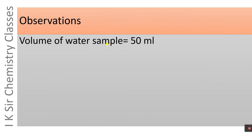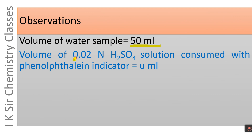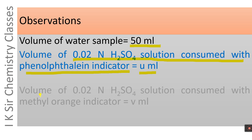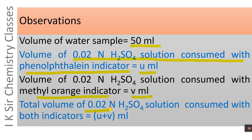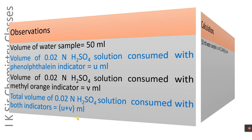Observations: Volume of water sample taken in the conical flask = 50 ml. Volume of 0.02 N H2SO4 solution consumed with phenolphthalein indicator = U ml. Volume of 0.02 N H2SO4 solution consumed with methyl orange indicator = V ml. Total volume of 0.02 N H2SO4 solution consumed using both indicators = (U + V) ml.